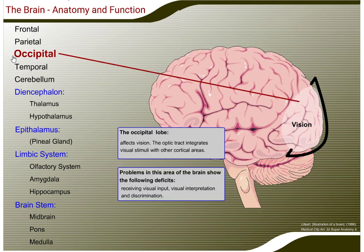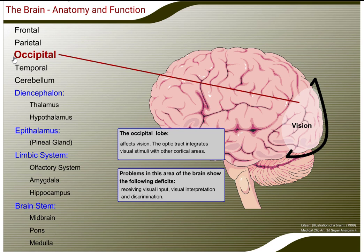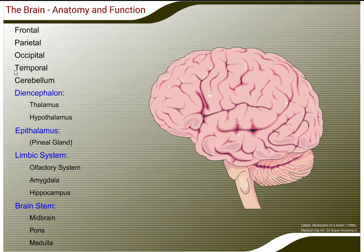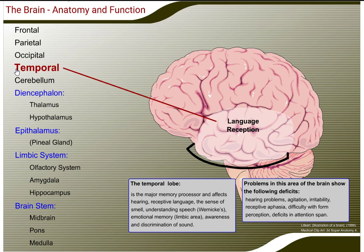The occipital lobe affects vision. The optic tract integrates visual stimuli with other cortical areas. Problems in this area of the brain show the following deficits: problems receiving visual input, visual interpretation, and discrimination.